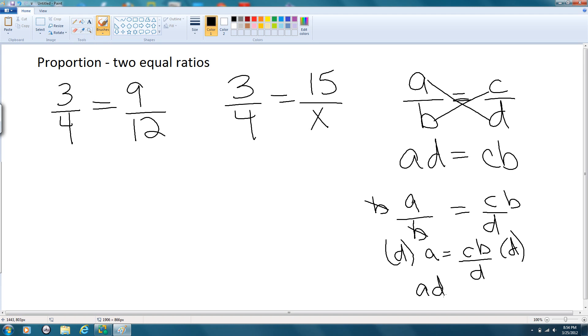The AD, commutative property there, is equal to BC or CB. So that's the idea of cross products.